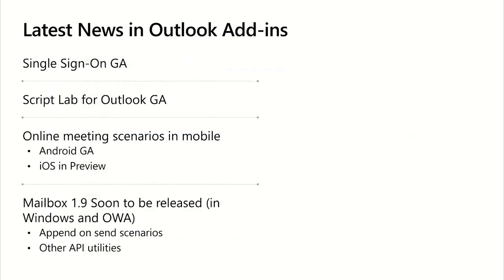Here are some exciting news for Outlook developers. Number one, we are happy to announce that Single Sign-On is officially GA. This is a feature that enables you to reuse the credentials of the current signed-in user and avoid the friction of asking for username and password in your add-ins. This works for web add-ins in Excel, Word, PowerPoint, and Outlook.